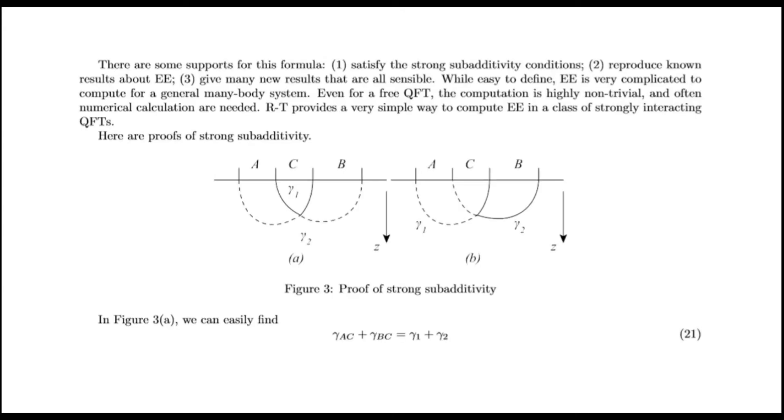This formula was first proposed by Ryu and Takayanagi who were motivated by black hole entropy. There are some supports for this formula. One, it satisfies the strong subadditivity conditions. Two, it reproduces known results about entanglement entropy. Three, it gives many new results that are sensible. While easy to define, entanglement entropy is very complicated to compute for a general many-body system. RT provides a very simple way to compute entanglement entropy in a class of strongly interacting conformal field theory.